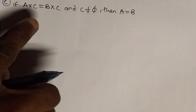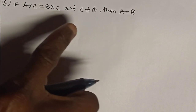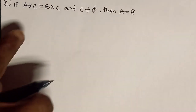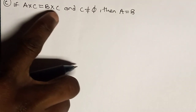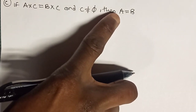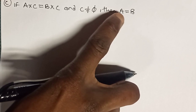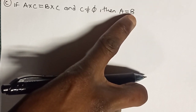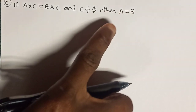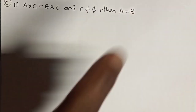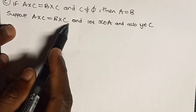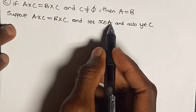Moving forward to part C: if A cross C is the same as B cross C and C is not empty, then A equals B. We'll assume A cross C is the same as B cross C. Then we'll let X be an element of A and show that X is in B. Similarly, we let X be an element of B and show that X is in A. That's when we conclude that A equals B.